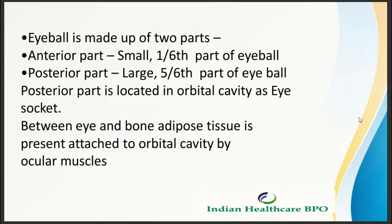The eyeball is made up of two parts. The anterior part is very small and it is a 1/6th part of the eyeball. The posterior part is very large and it is a 5/6th part of the eyeball. The posterior part is located in the orbital cavity, also known as the eye socket.